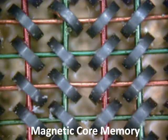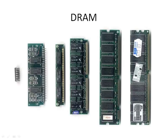Magnetic core memory is not really used in modern computing systems at all. Instead what we find is DRAM, or dynamic RAM. Here we can see some different DRAM chips and modules from a number of different years and eras. The more recent memory modules on the right contain a number of different DRAM chips on one circuit board that just slots into the computer. Modern DRAM modules may contain quite large capacities, up to several gigabytes in one module.